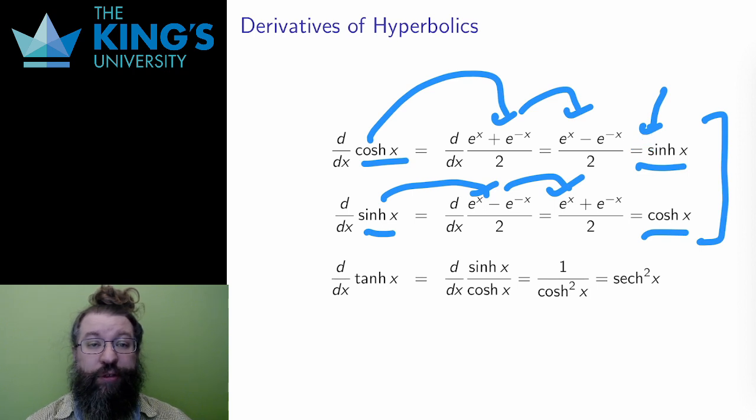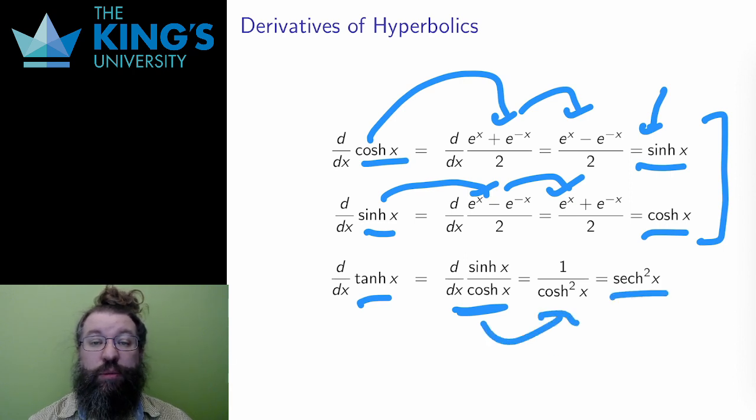The derivative of the other four hyperbolics are then chain rule and quotient rule calculations using the first two derivatives. For example, the derivative of hyperbolic tangent turns out to be the square of hyperbolic secant. And this is also exactly the same as trig, where the derivative of tangent was secant squared.